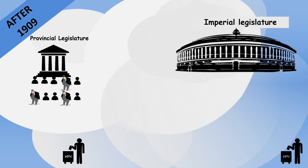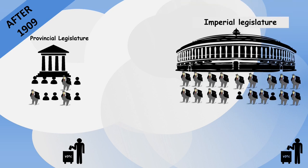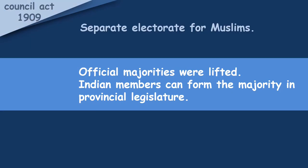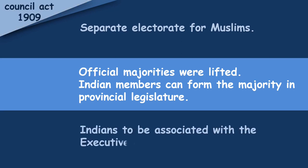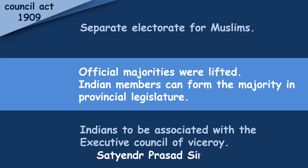Remember, the Central Legislative Council was still dominated by a British majority. Another provision of this act allowed Indians to be associated with the executive council of the Viceroy for the first time. Satyendra Prasad Sinha became the first Indian member in the Viceroy's Executive Council.